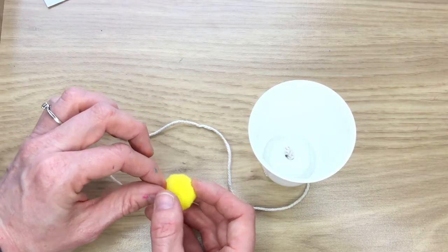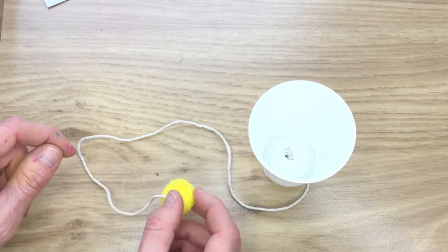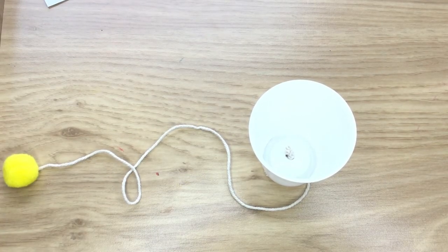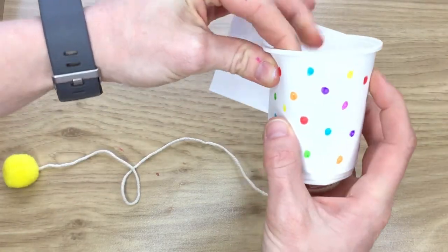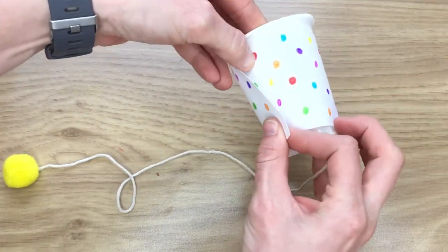Just with a bit of PVA glue, I'm going to stick that onto there. Once that's dry, you can stick your special sheet of paper around your cup.